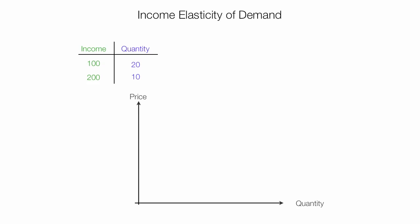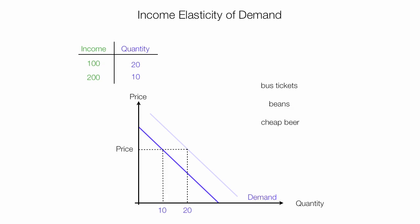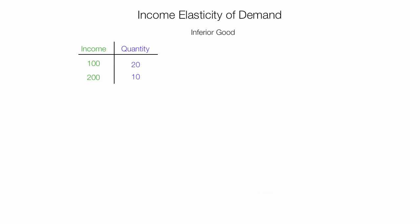Now imagine that income goes up but quantity goes down — individual demand goes down. We have a price and a starting quantity of 20, but income goes up and demand drops to 10. For example, if your income goes up, you buy less bus tickets, less beans, and less cheap beer — you buy expensive beer instead. This makes it a negative or inferior good.